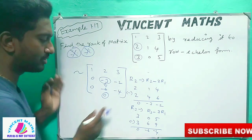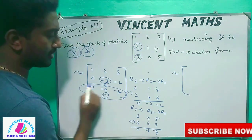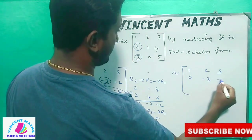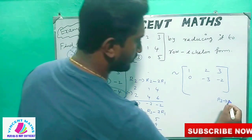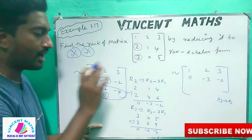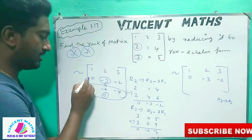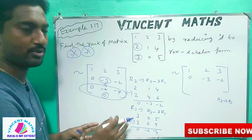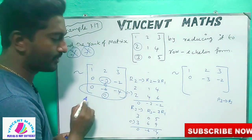So we have 0. So what do we do now? So R1, R2 is the same: 1, 2, 3; 0, minus 3, minus 2. So we can talk about R3. You will write R1. We need R3. When R3 starts, we do a few steps.